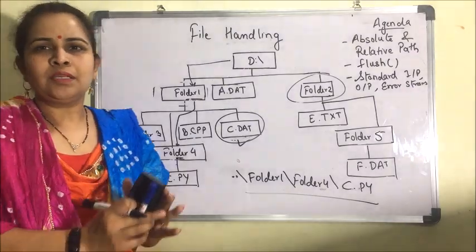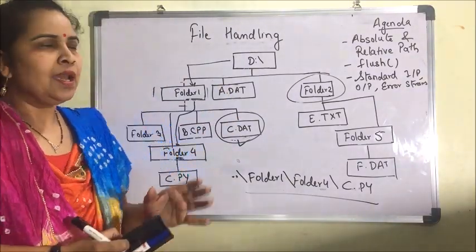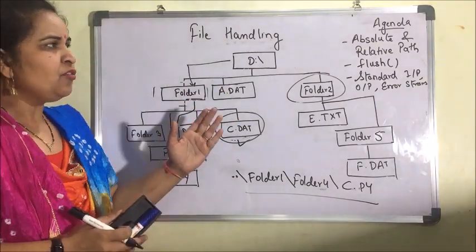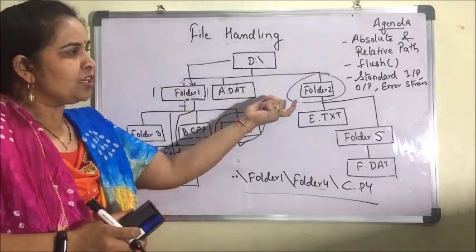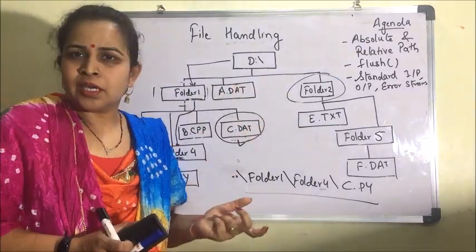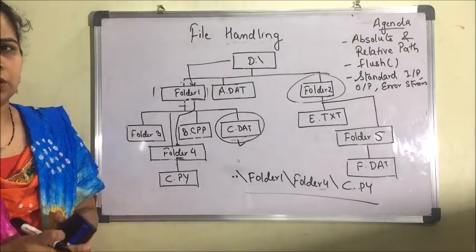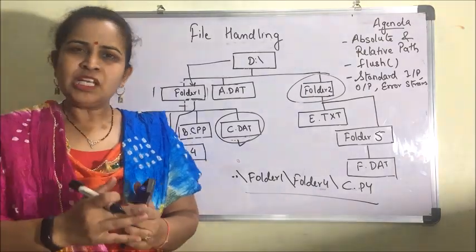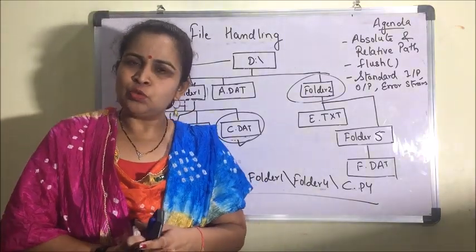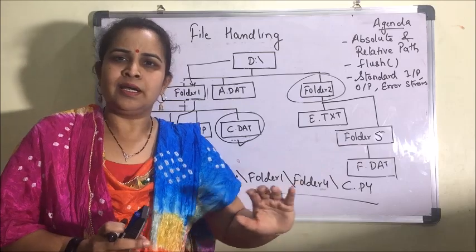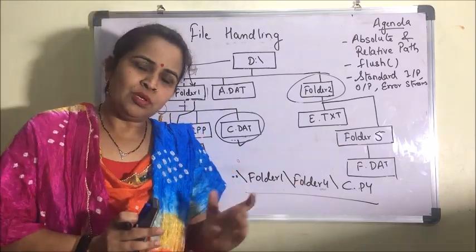So to summarize: absolute path is the complete location of any particular file, and relative path is the path relative to the current working folder. Now the flush function. Flush function is used to transfer all the content which is in the buffer to the file.